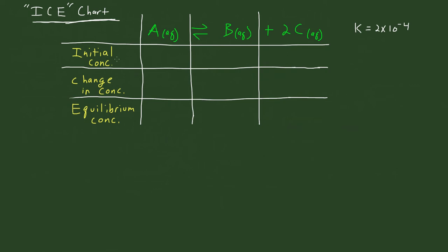For the initial concentration — this first row — consider the reaction A goes reversibly to B plus 2C, which is governed by a K that is 2 times 10 to the negative 4. Let's say that initially we have 2 moles of A, 1 mole of B, and 1 mole of C.